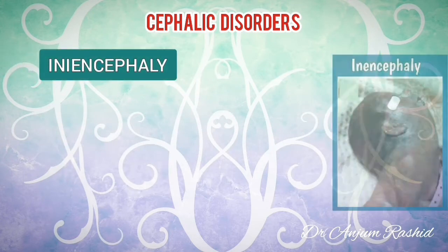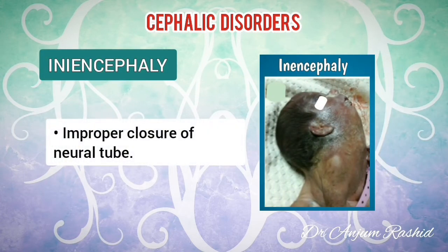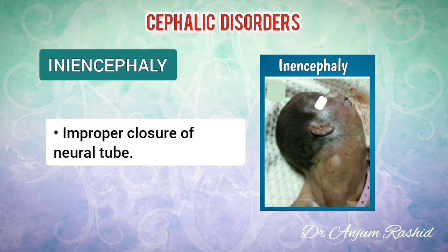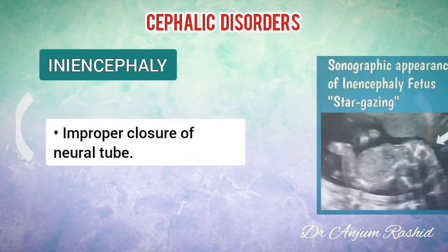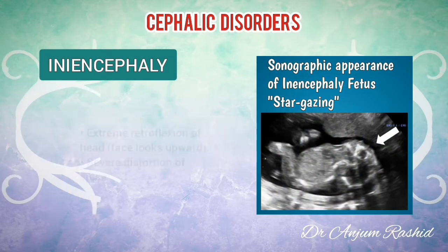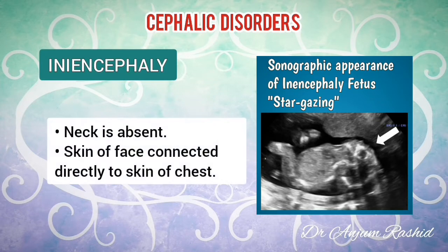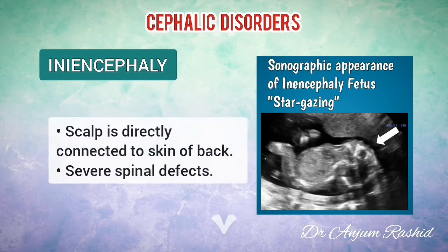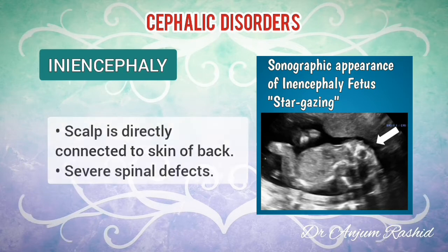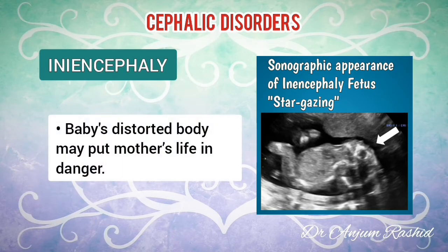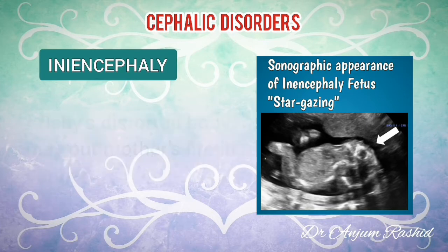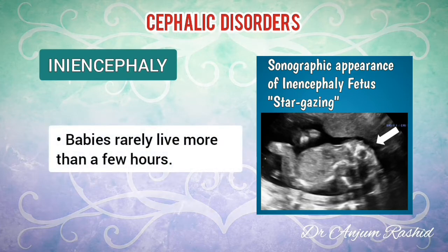The next type is iniencephaly. It is a rare birth defect caused by improper closure of the neural tube during fetal development. The neural tube is a part of the human embryo that becomes the brain and the spinal cord. The defect results in extreme retroflexion, that is backward bending of the head, combined with severe distortion of the spine. In most infants, the neck is absent, and the skin of the face is connected directly to the skin of the chest, while the scalp is directly connected to the skin of the back. There are also severe spinal defects. The baby's distorted body may also put the mother's life in danger. Babies with this disorder rarely live more than a few hours.